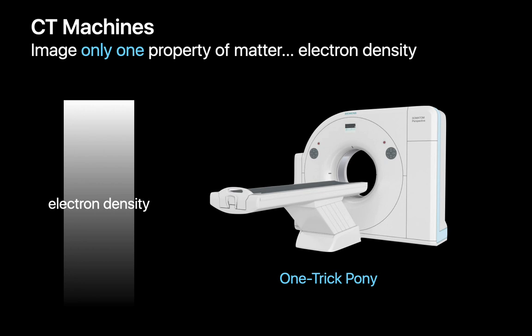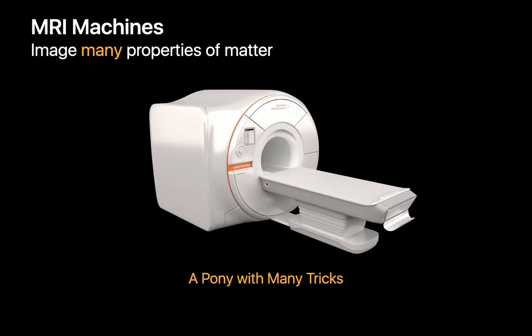CT machines don't capture any other property of matter, so they're basically a one-trick pony. MRI machines, by comparison, are a pony that can do many tricks, able to create image maps of many different properties of matter, not just one.